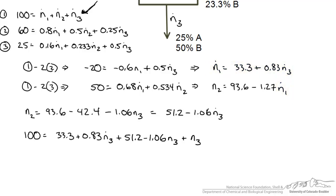So I have taken equation n1 equals 33.3 plus 0.83n3 and plug that in to our first equation above. And then I have taken the simplified form of n2 in terms of n3 and then also added n3.